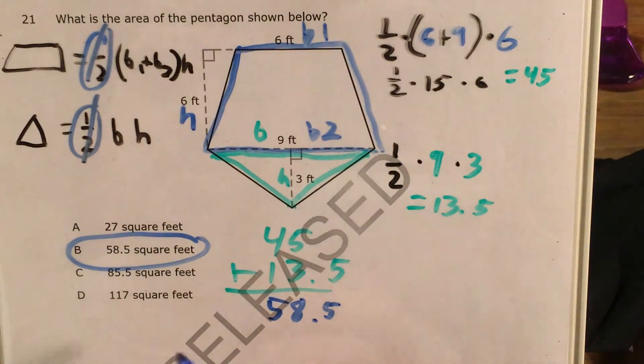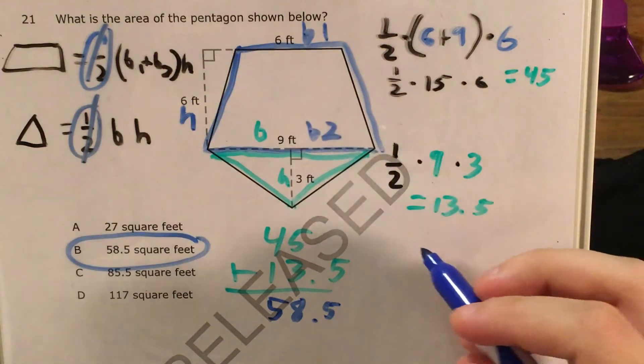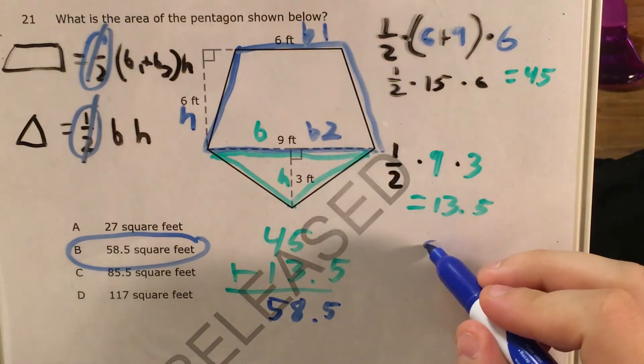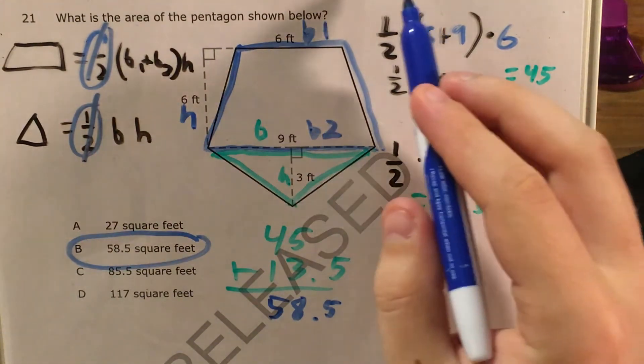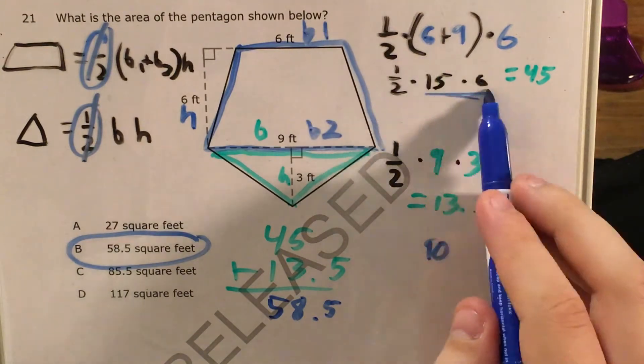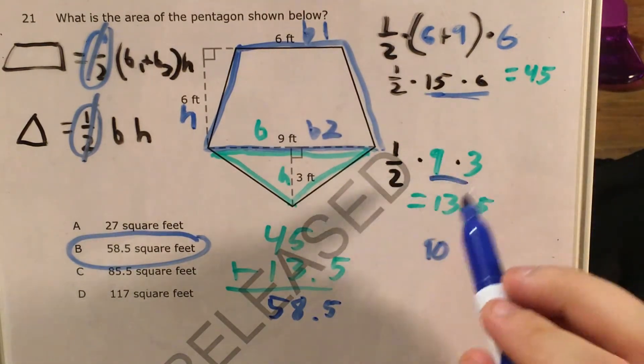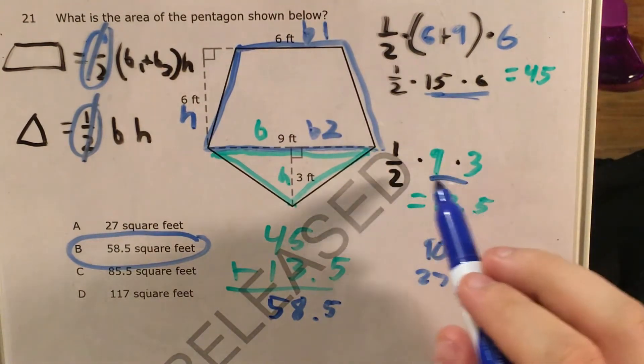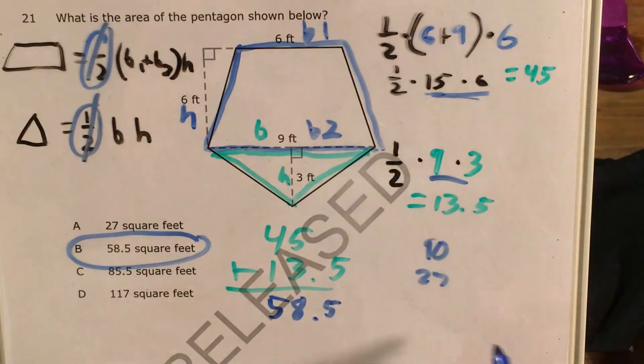We would get ninety for the area of the pentagon because this would just be fifteen times six. We get twenty-seven for the area of the triangle because we would forget the one-half and it would just be nine times three. We would get a hundred and seventeen and that is choice D.